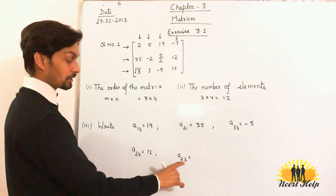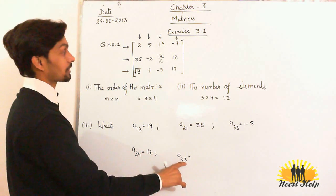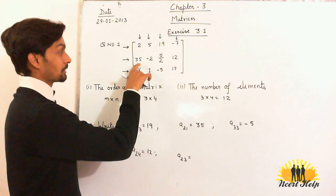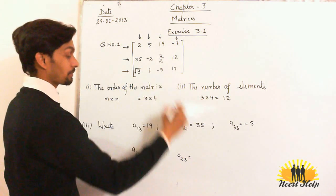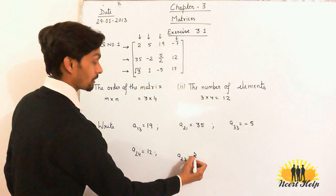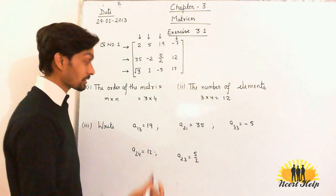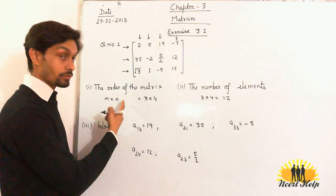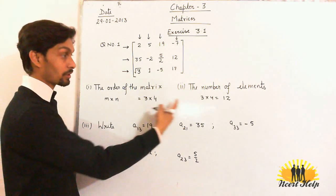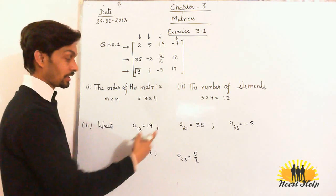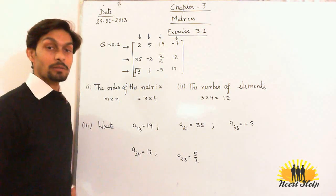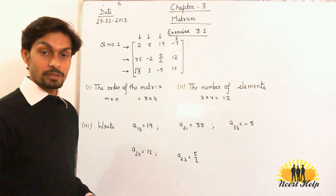And a₂₃ means the second row, third element — the third element in the second row is 5. Now you can understand the order of the matrix, the number of elements, and how to find a particular element in the matrix.